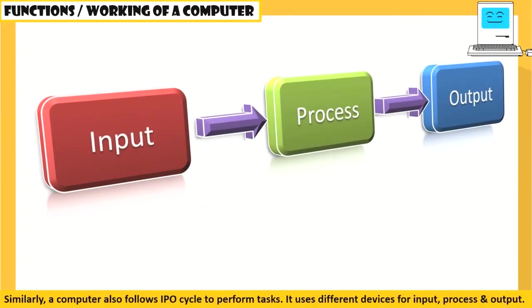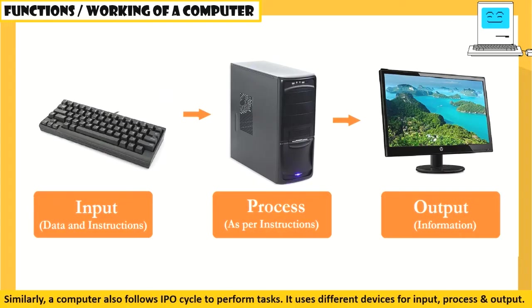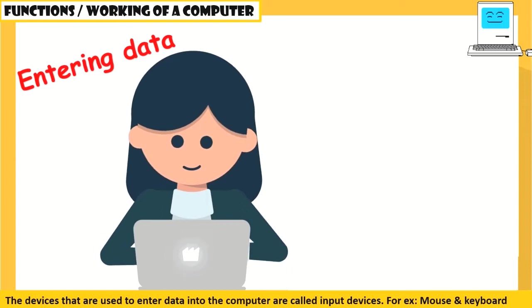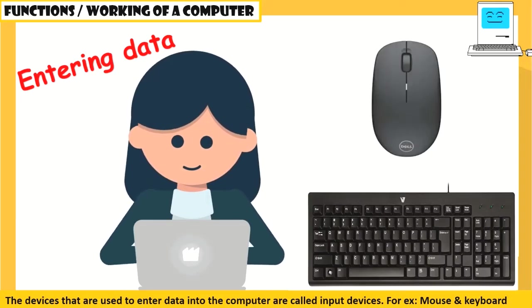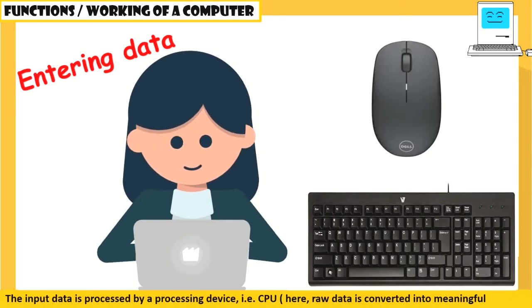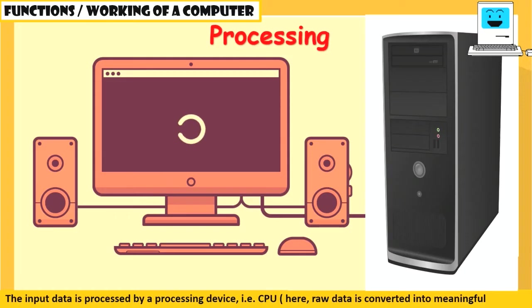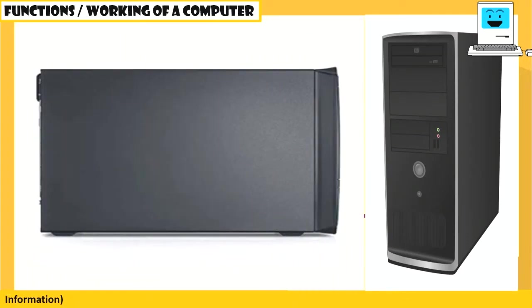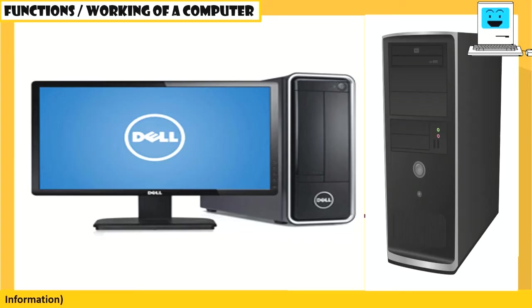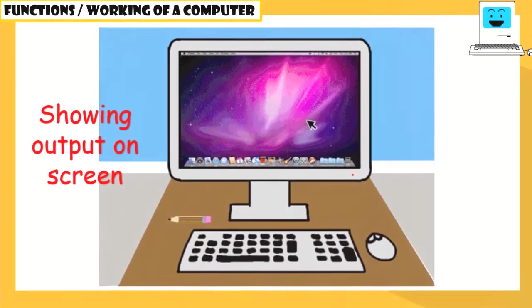Similarly, a computer also follows the IPO cycle to perform tasks. It uses different devices for input, process, and output. The devices that are used to enter data into the computer are called input devices, for example, mouse and keyboard. The input data is processed by a processing device. Here, raw data is converted into meaningful information.